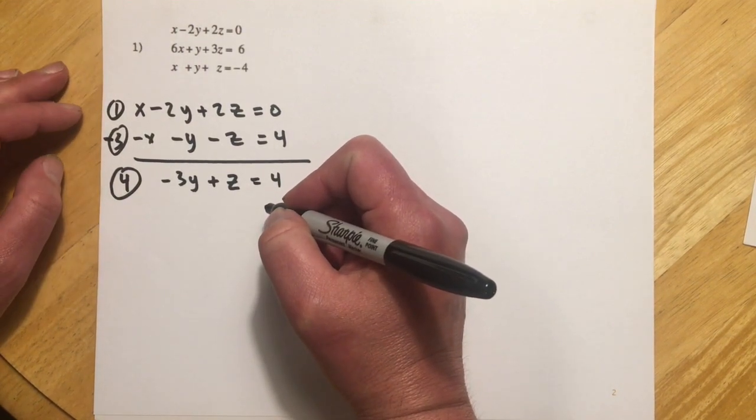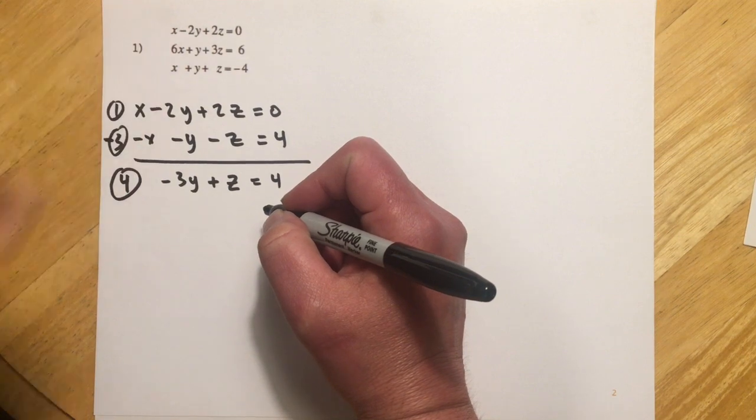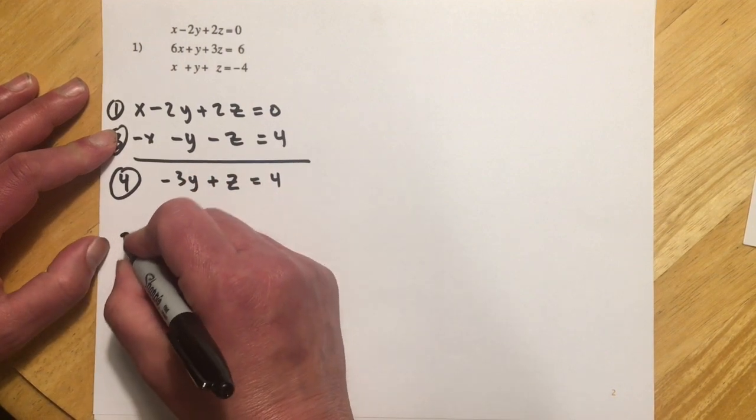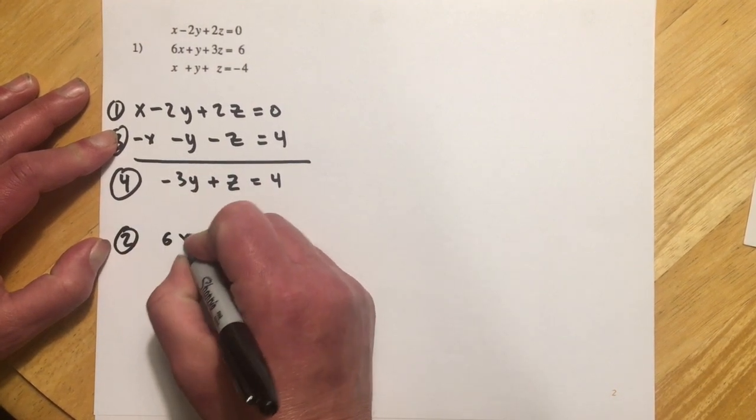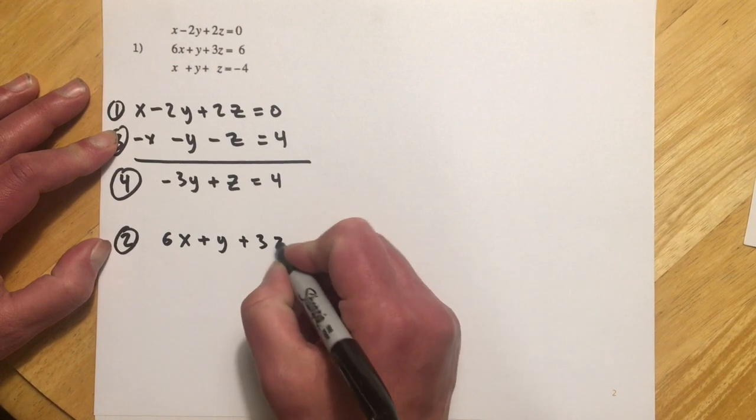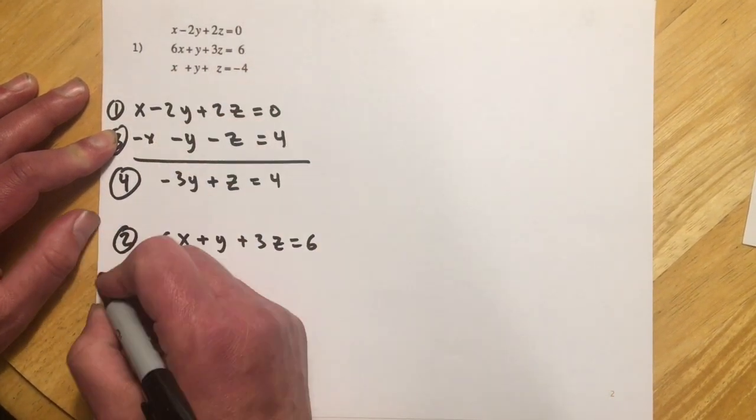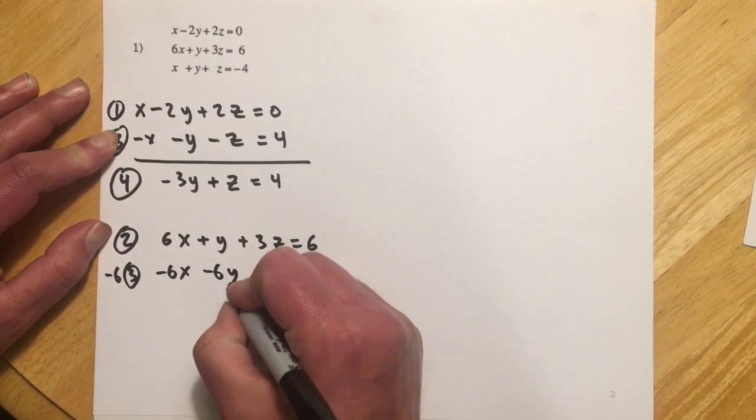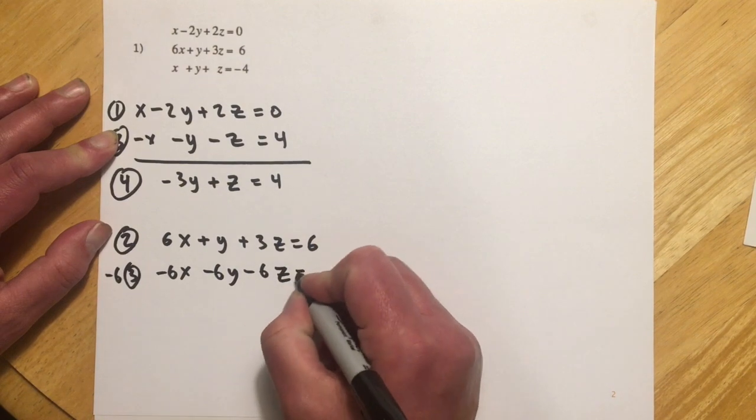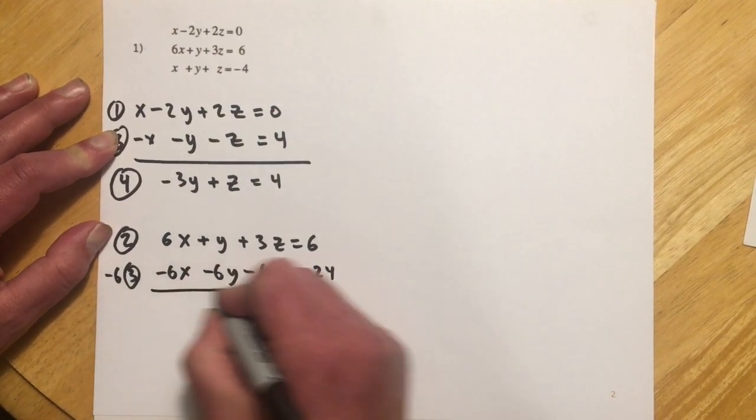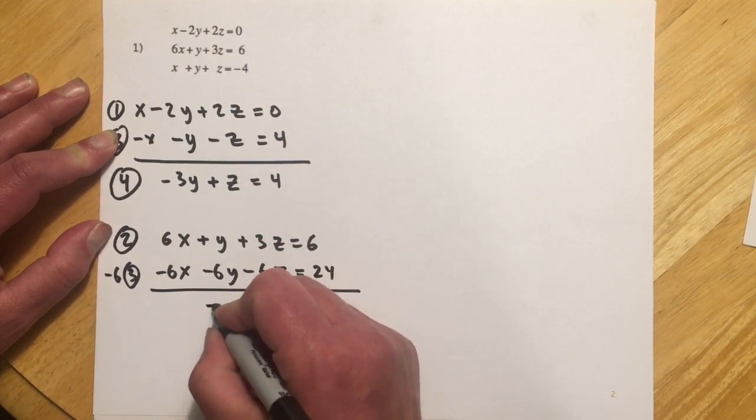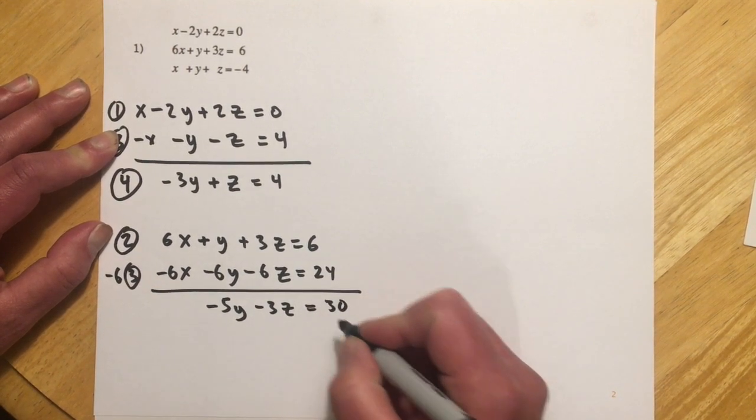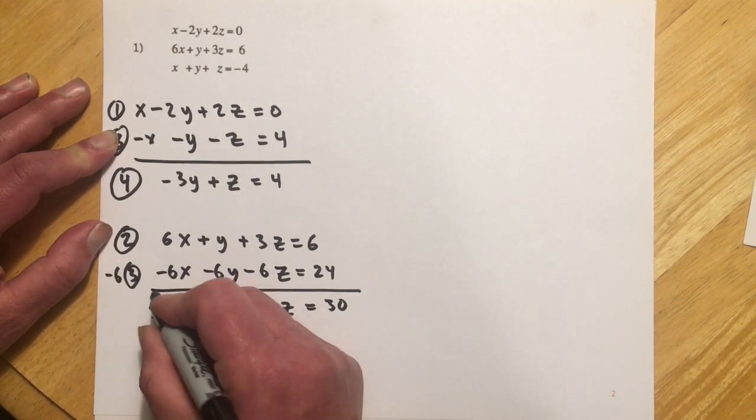And then I'm going to pick a different pair of equations. I'm going to pick two and three, and then I'm going to eliminate x again. So I'll do equation two. And then I'll go negative six times equation three. So negative 6x, negative 6y, negative 6z, negative negative for 24. So x's drop out, and that was the plan. I got negative 5y minus 3z equals 30. And just to give it a name, I'm going to call this one five.